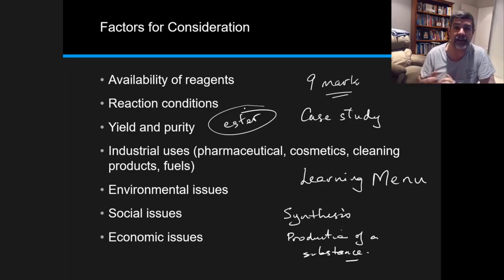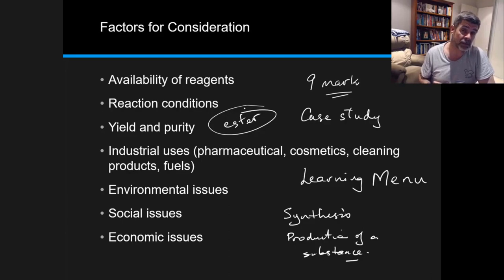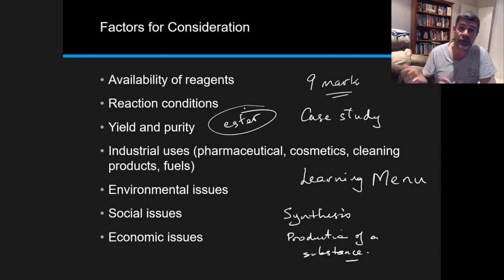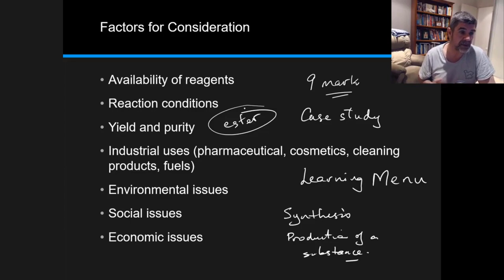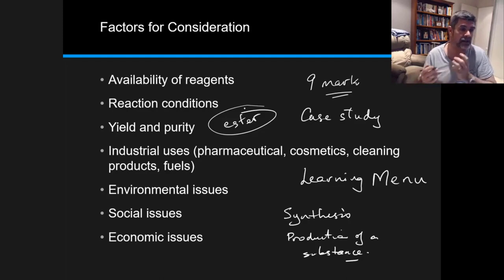The availability of reagents — my ester is the synthesis of an alcohol and a carboxylic acid, so I would need to source both of those. Where would I get my alcohol? That could be from a fermentation reaction, particularly if I'm looking at ethanol. It could also be from the hydration of ethene. I also need a carboxylic acid, which I can obtain through an oxidation reaction of a primary alcohol. Then I can use those two reagents to react them and produce my ester.